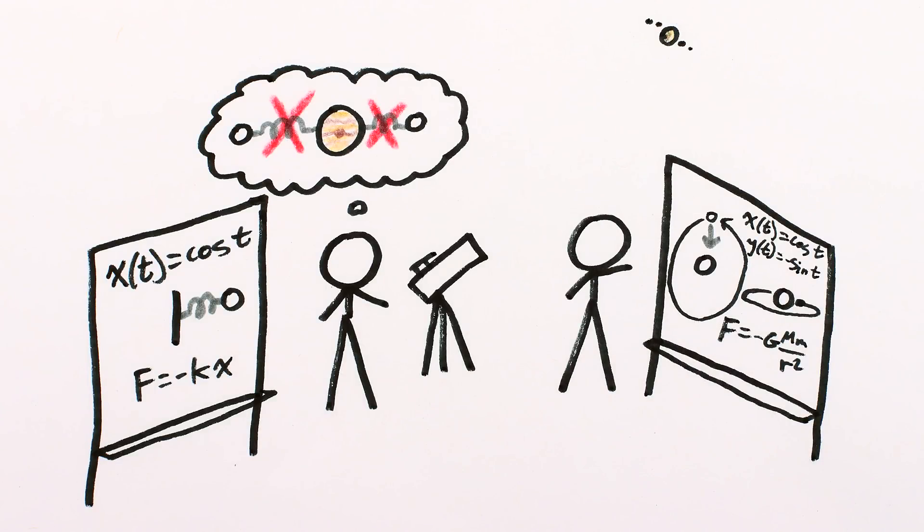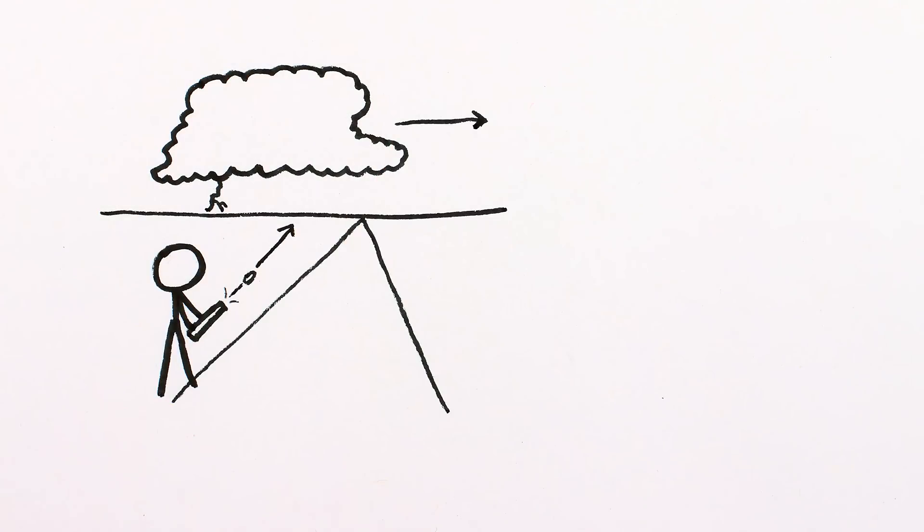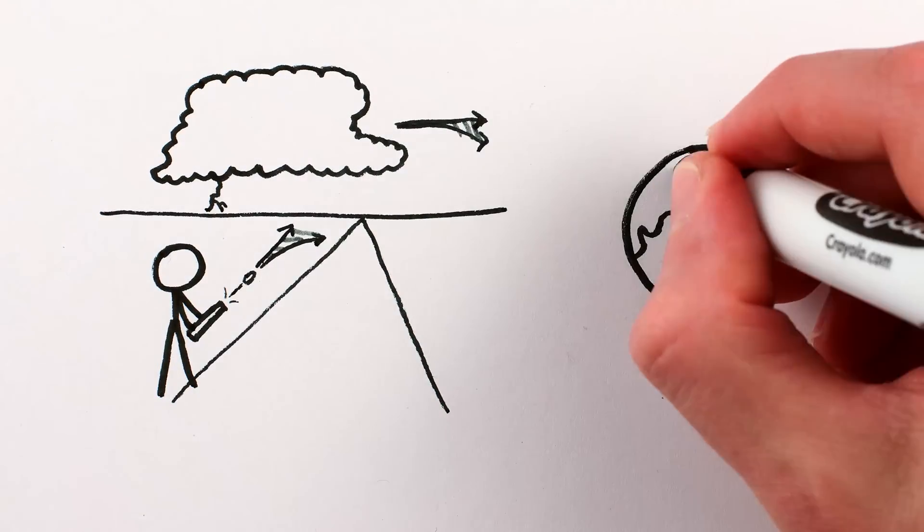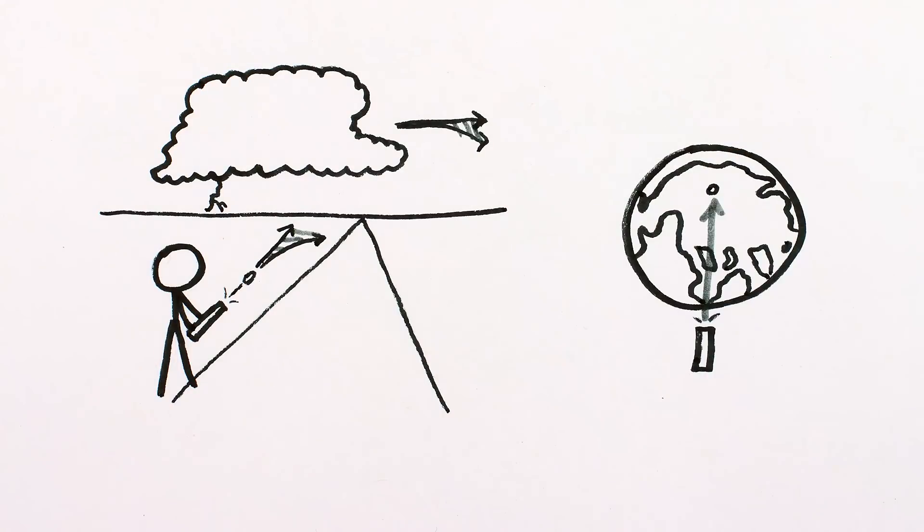The moons of Jupiter aren't alone in having multiple mathematical descriptions. Projectiles and storms on Earth experience a force called the Coriolis effect that causes them to turn. But viewed from an external perspective, the projectiles and storms are what goes in a straight line while the Earth turns beneath them.